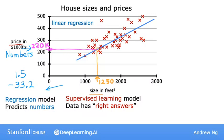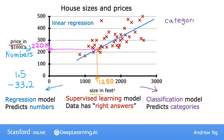Linear regression is one example of a regression model, and there are other models for regression problems too. Just to remind you, in contrast with the regression model, the other most common type of supervised learning model is called a classification model. A classification model predicts categories.